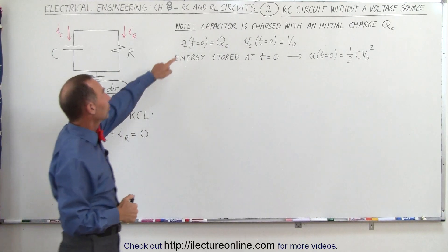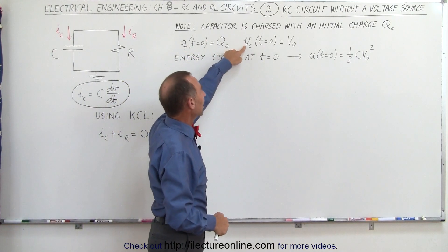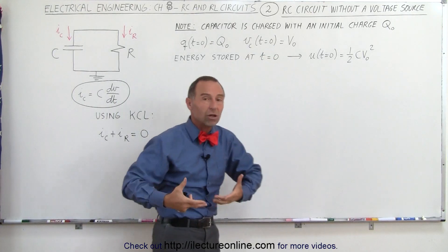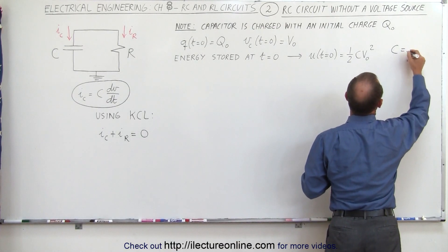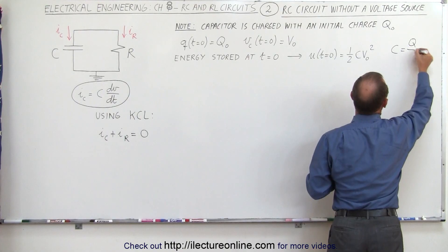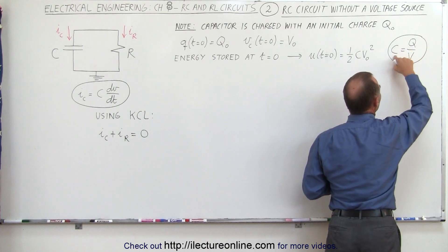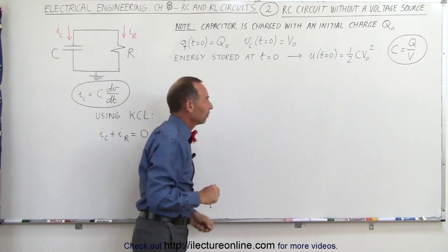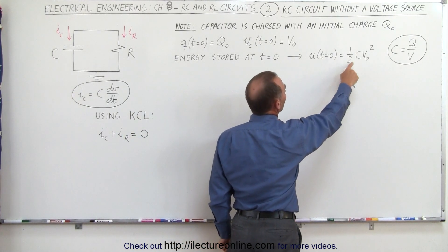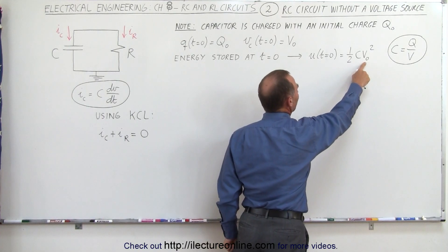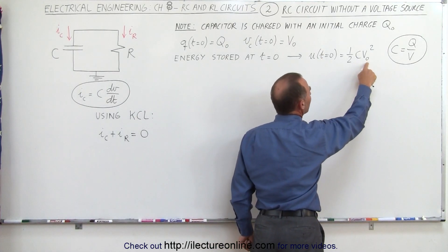At the initial time equals zero, the charge on the capacitor is Q sub nought, and the voltage across the capacitor at time equals zero is some initial value V sub nought. Remember that capacitance is defined as the charge on the capacitor divided by the voltage across it, so if we know the initial charge and the capacitance, we can find the initial voltage. Also, the energy on the capacitor is one-half the capacitance times the voltage squared, so at time equals zero, the energy equals one-half C times V sub nought squared.